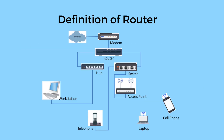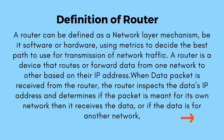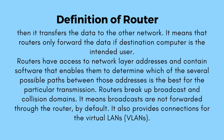Definition of router. A router can be defined as a network layer mechanism, be it software or hardware, using metrics to decide the best path for transmission of network traffic. A router is a device that routes or forwards data from one network to another based on their IP address. When a data packet is received, the router inspects the data's IP address and determines if the packet is meant for its own network or if the data is for another network.